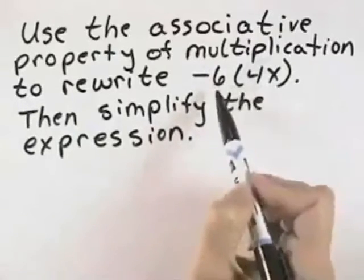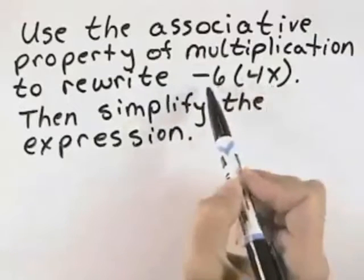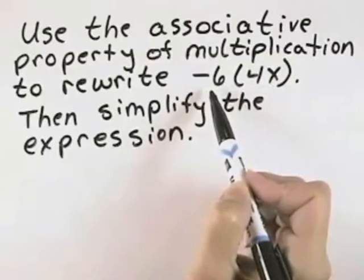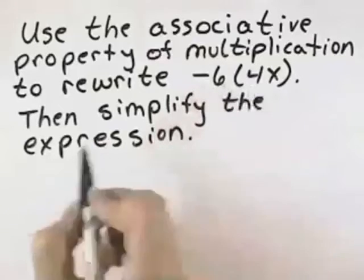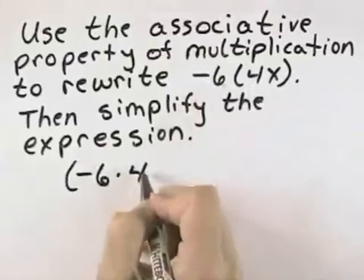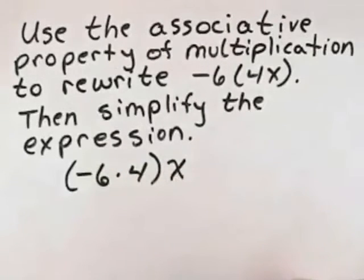What we can see written here is that the second and third are being multiplied together first, and then you're going to multiply by the first number. So in order to use the associative property, we would want to switch that, and we would instead want to multiply the first times the second parts of our product, and then multiply that result by x.